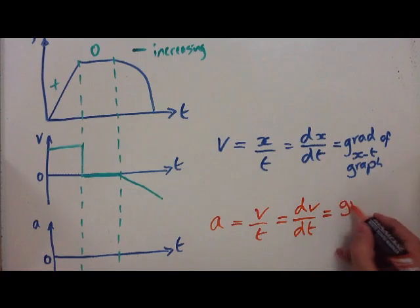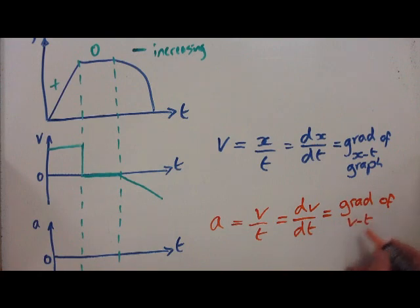Or if I were to write it, little change in velocity divided by little change in time. Looks very, very similar to the one above. That's because it's identical, the only difference is rather than talking about an xt graph, it's the gradient of the vt graph.